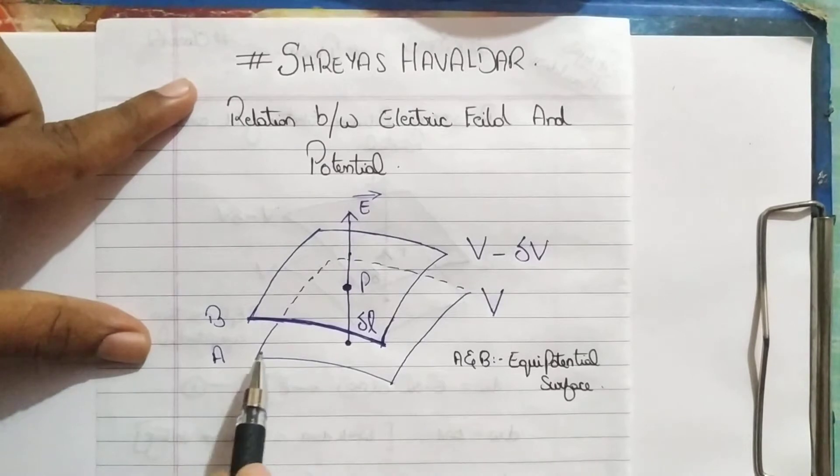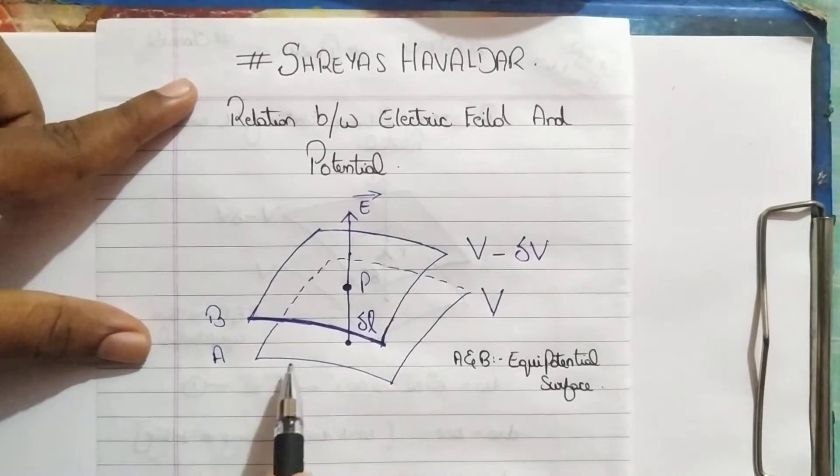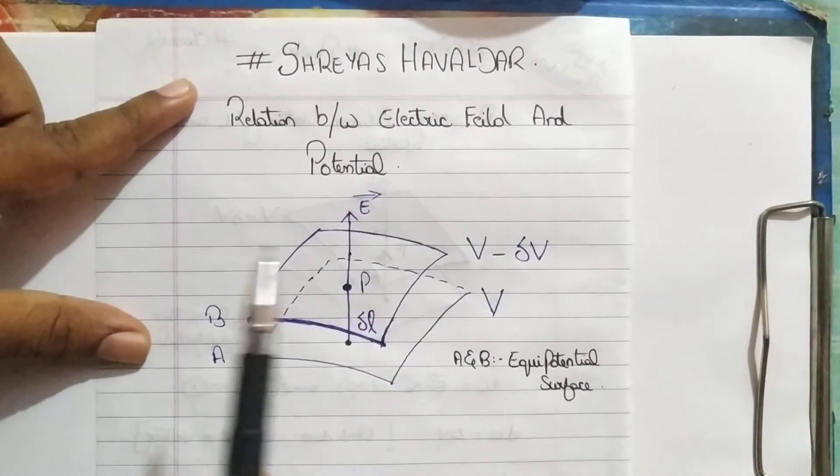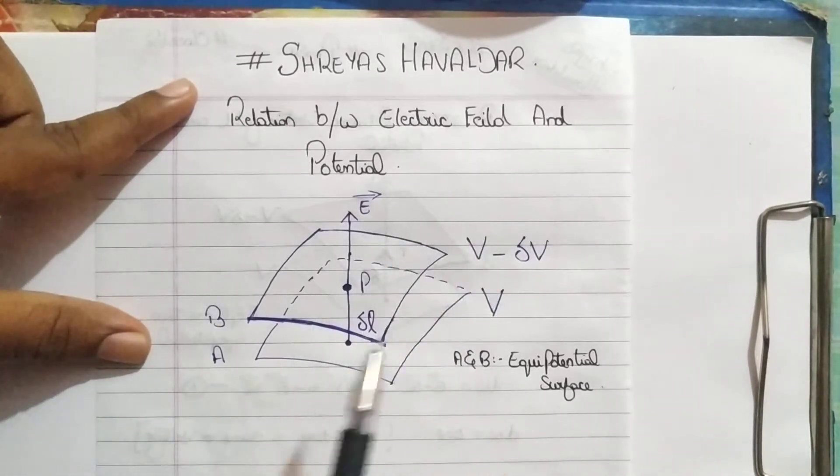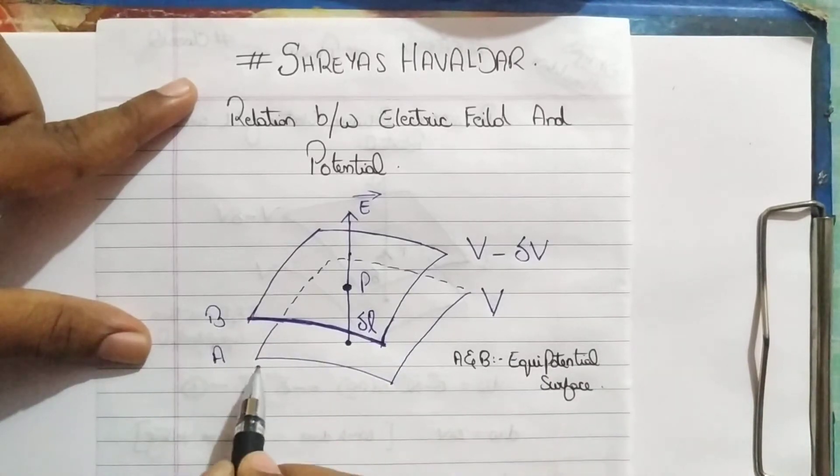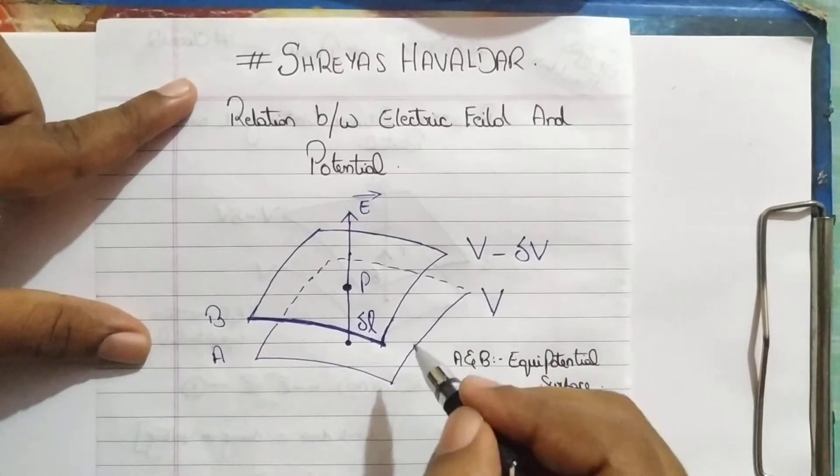That means, if you consider this point on this A surface and this point on the same A surface, then there is no change in potential. Both the points have same potential. Now, we have two such surfaces.